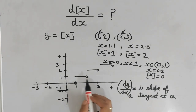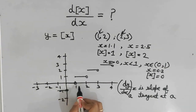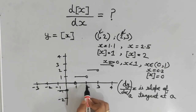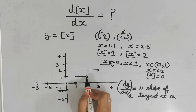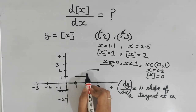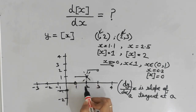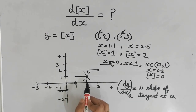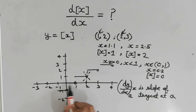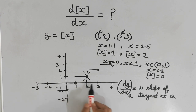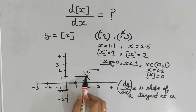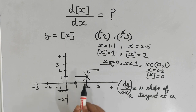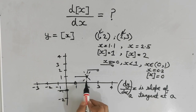Remember one thing: at all integer values — suppose at x equals 2 — you cannot determine a particular slope. There could be many slopes; you can draw tangents in many directions. So the function is non-differentiable at integer values. The function is differentiable on all values except integer values, because at integer points we can draw several tangents and there is no specific unique one.